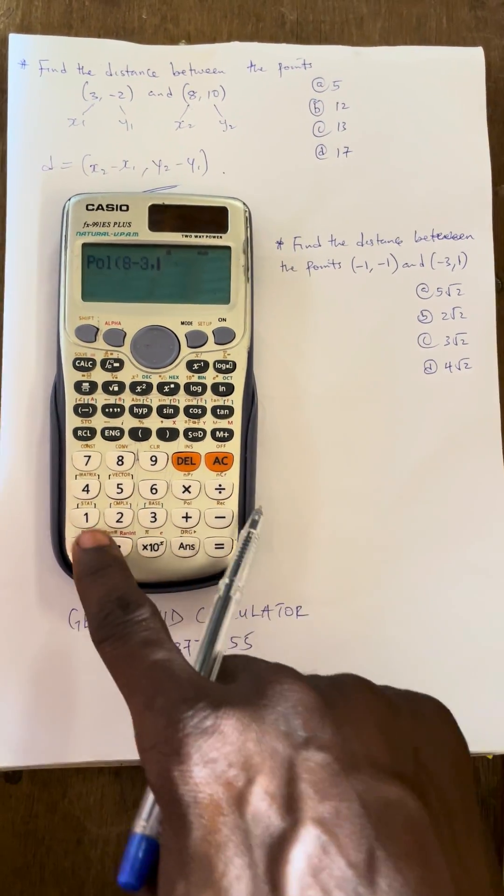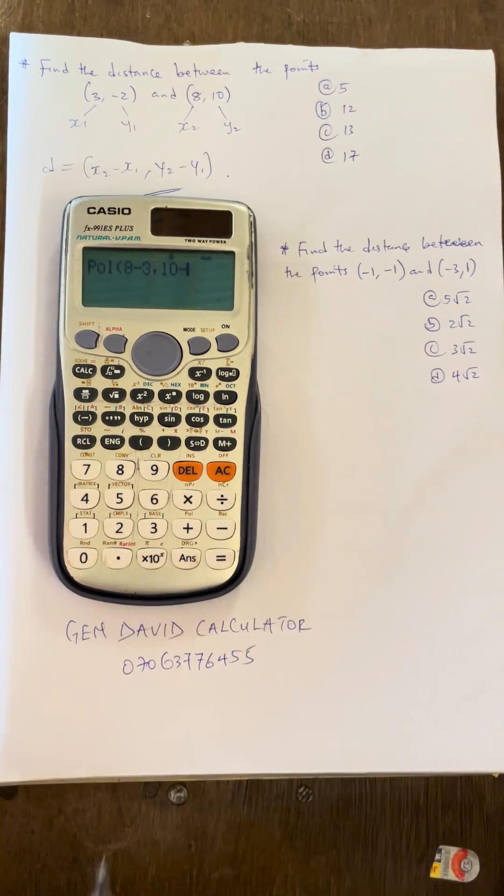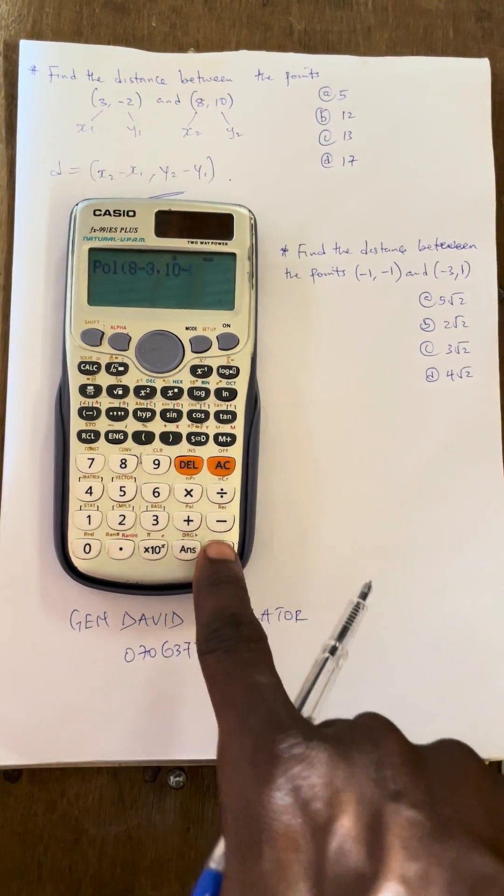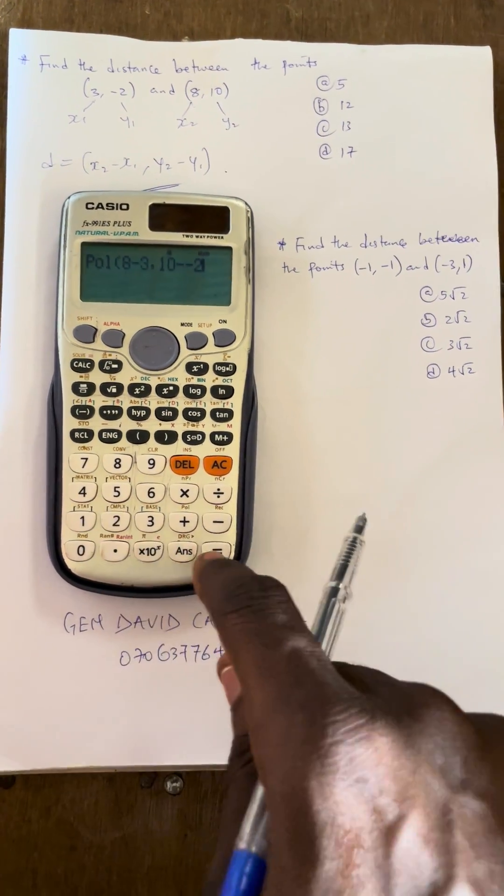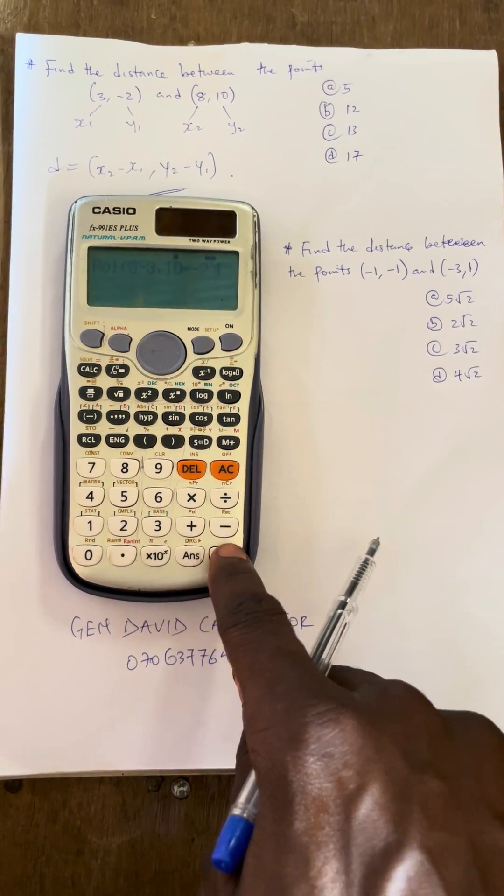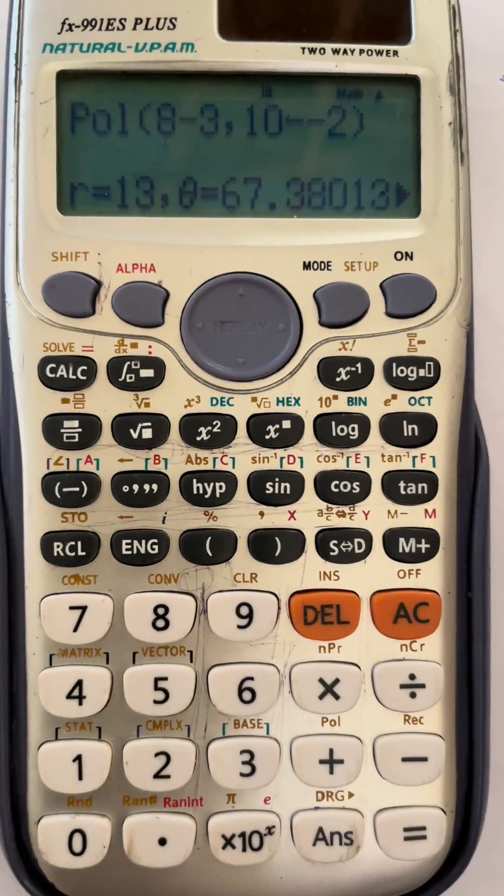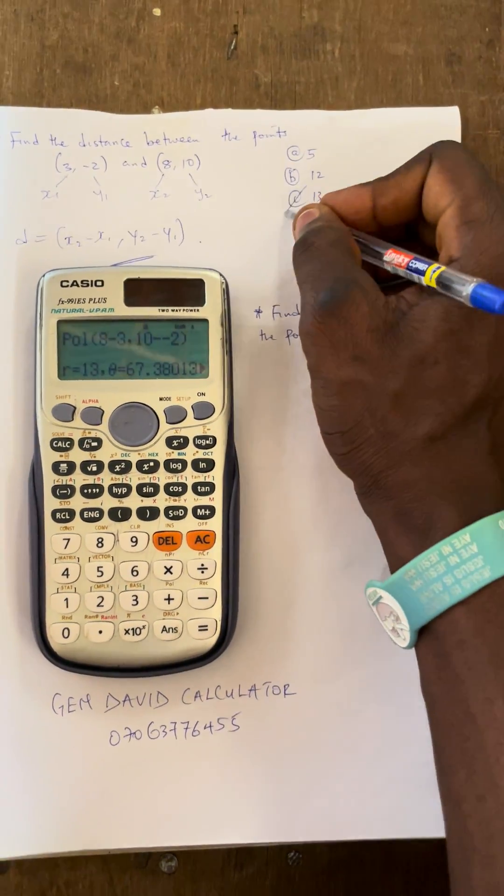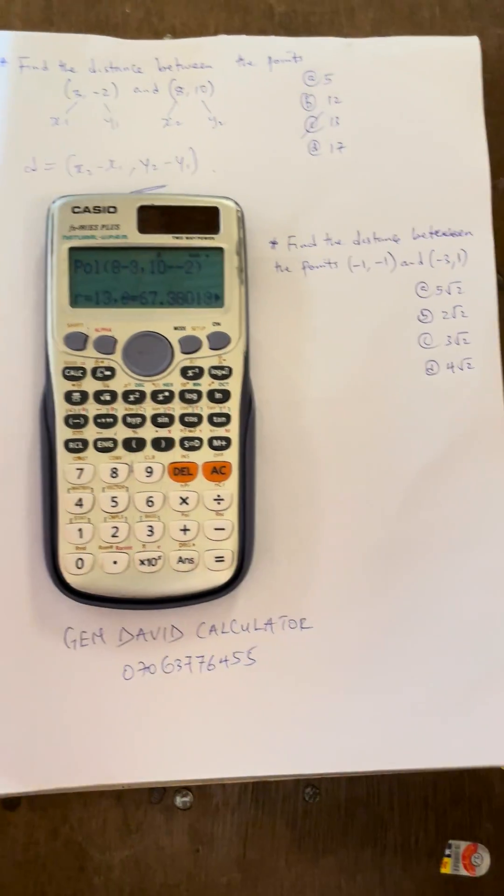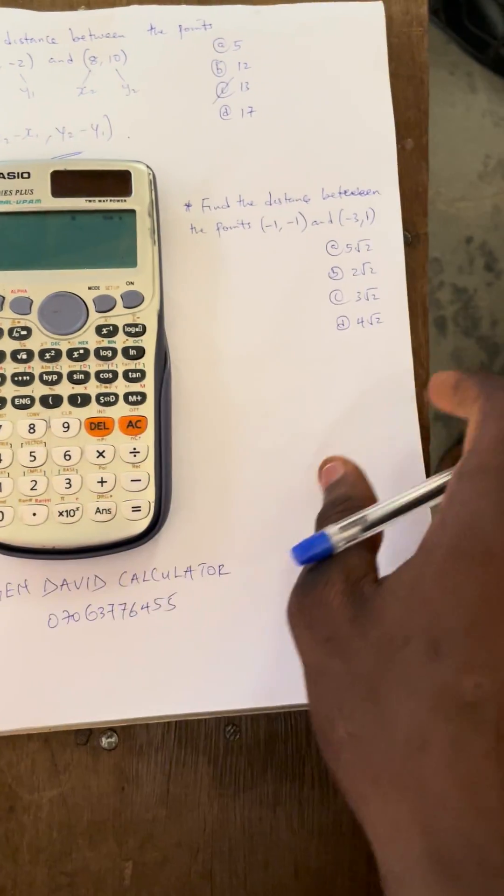Then your y2, which is 10, then minus. You observe that our y1 is minus 2, so press minus 2, then close the bracket, then equals 2. You observe that the value is equal to 13. That shows that the correct answer for this is equal to 13. Press AC. Let us go to the second question.